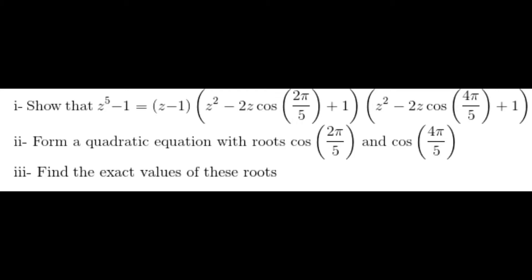Part one asks us to show that z to the 5 minus 1 equals z minus 1 times z squared minus 2z cos 2π/5 plus 1 times z squared minus 2z cos 4π/5 plus 1. Part two says form a quadratic equation with roots cos 2π/5 and cos 4π/5. Part three says find the exact values of these roots.